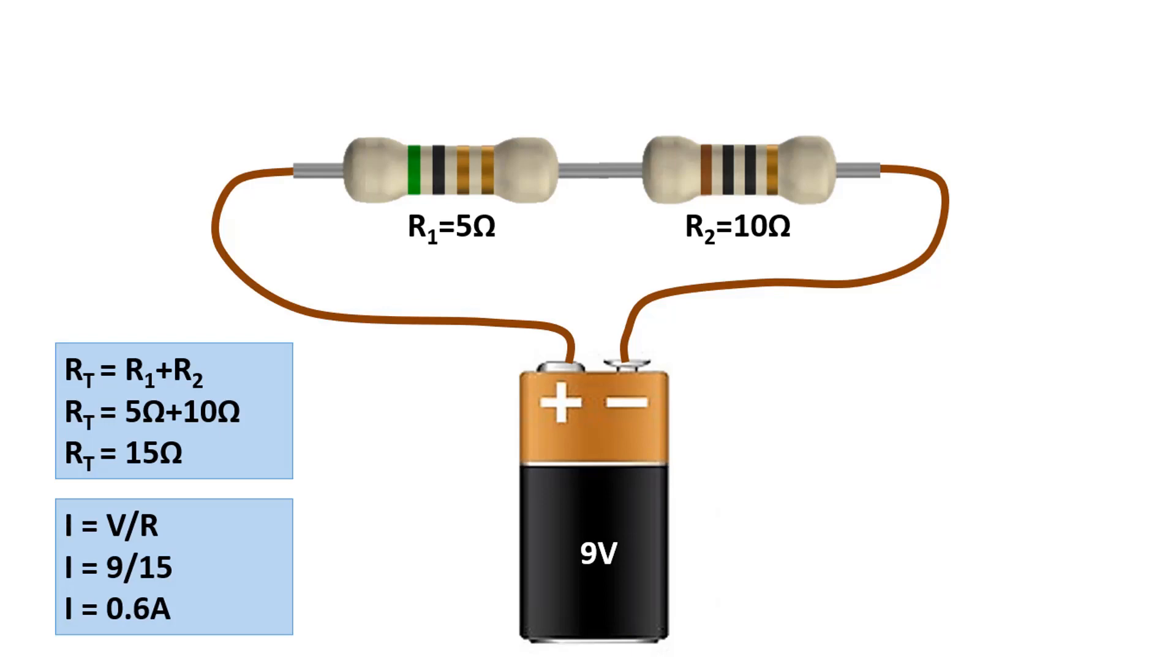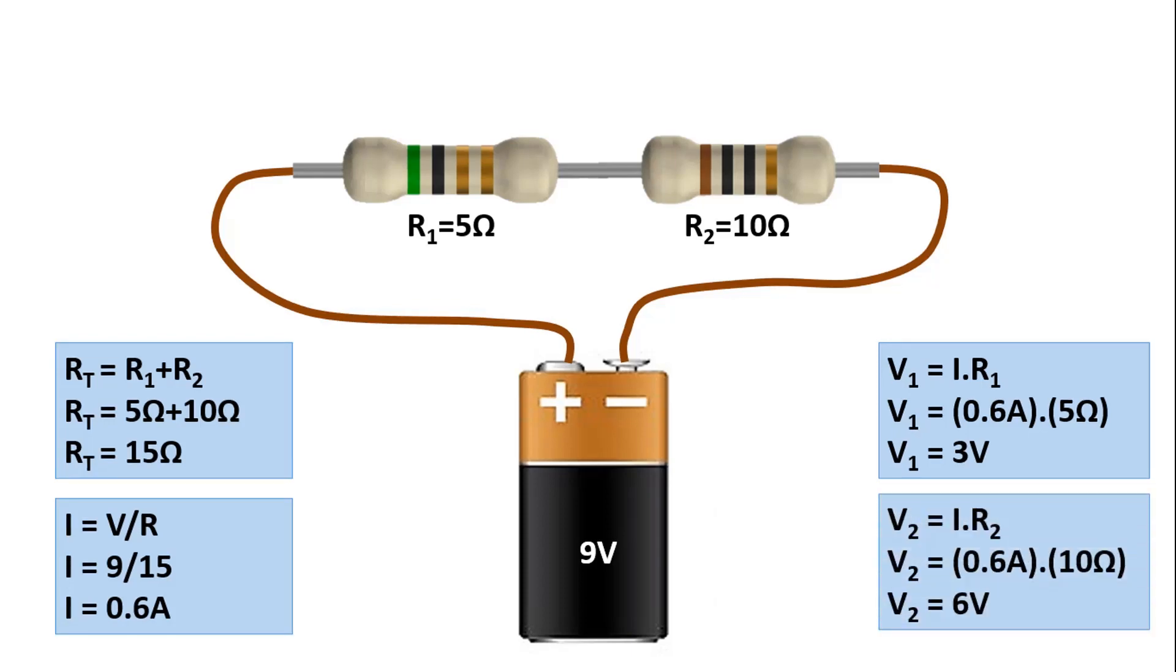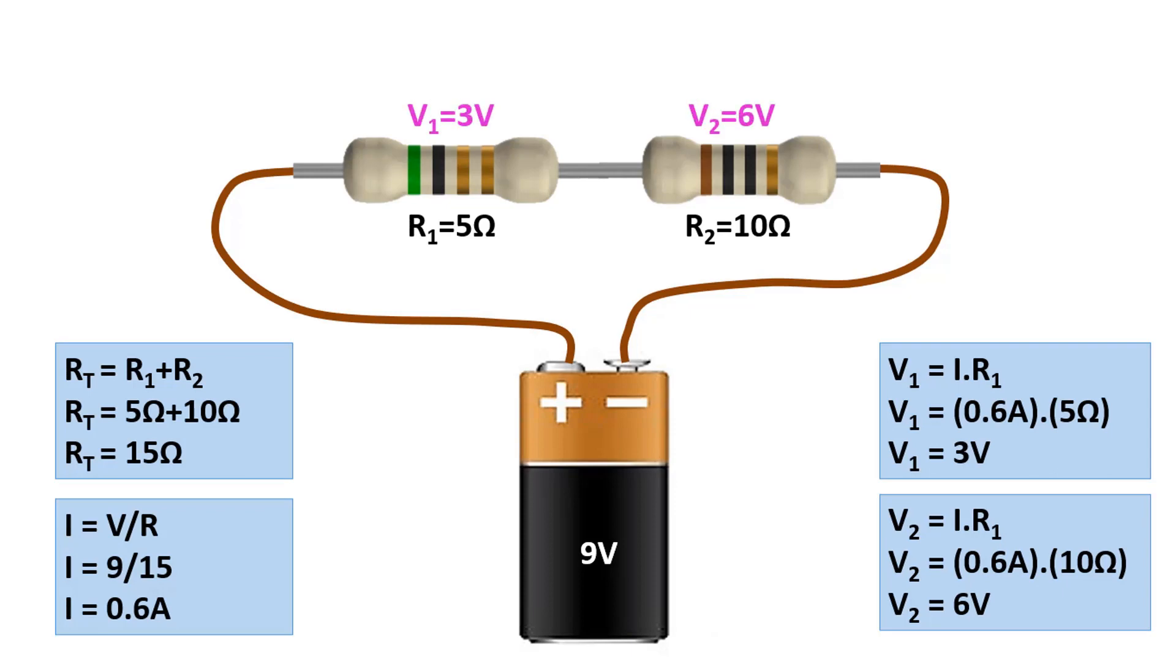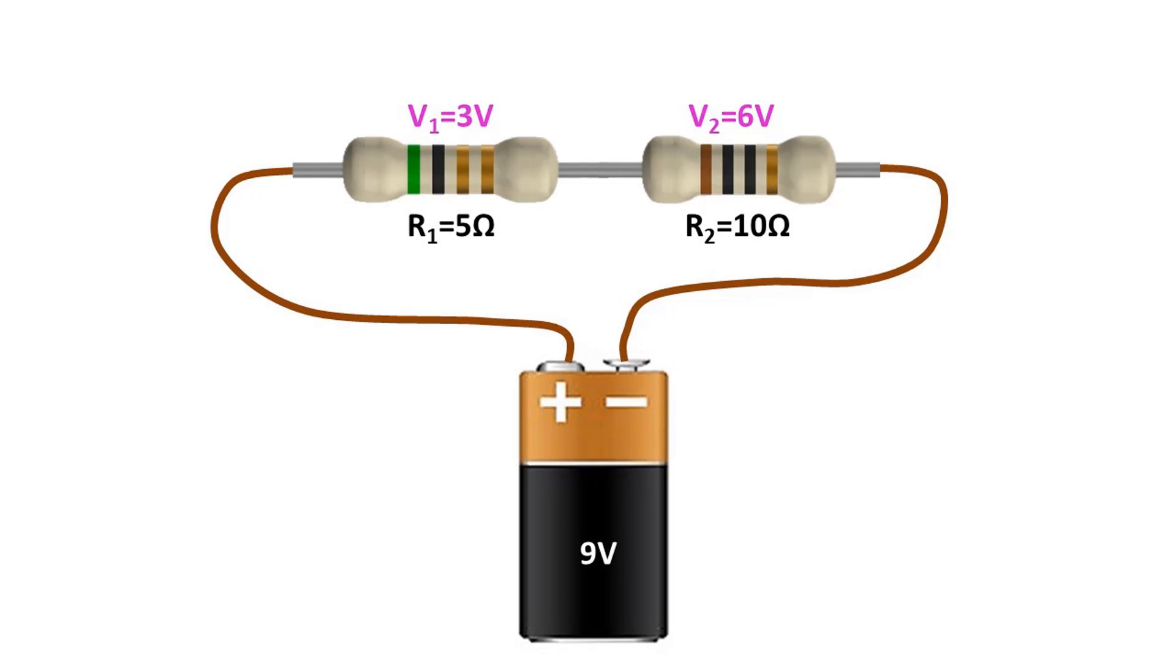We know that the same current flows through all resistors in series circuits. Then, we can find the voltage across resistor R1 as 3 volts from the formula IR1. In the same way, we can find the current across resistor R2 as 6 volts from the formula IR2. Here we can see that the voltages of the resistors are proportional to the resistance values. A 5 ohm resistor consumes 3 volts while a 10 ohm resistor consumes 6 volts. Even if more resistors were connected in series, we would have to calculate in the same way.